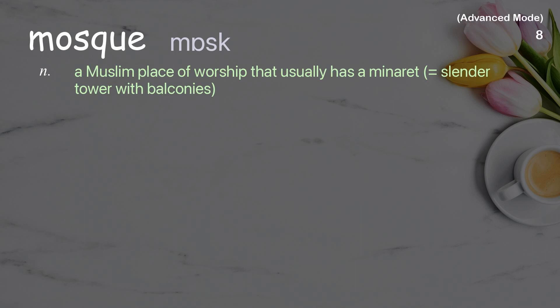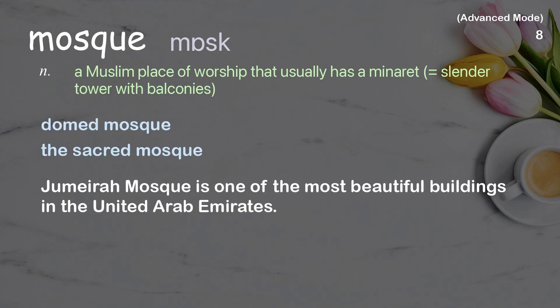Mosque: A Muslim place of worship that usually has a minaret — a slender tower with balconies. Examples: Domed mosque, the sacred mosque. Jumeirah mosque is one of the most beautiful buildings in the United Arab Emirates.